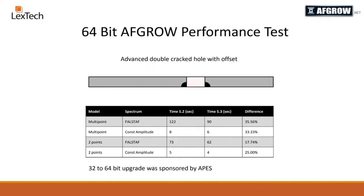Here is how the 64-bit version of AFGRO compares to the 32-bit version. As you can see the 64-bit version increased the speeds for the multipoint models between 33 and 35 percent and for the two-point models 17 and 25 percent.